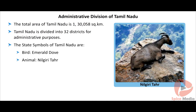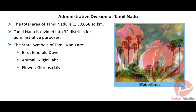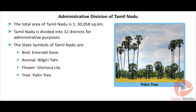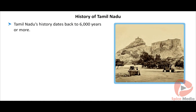The state symbols of Tamil Nadu are: Bird — Emerald Dove; Animal — Nilgiri Tahr; Flower — Gloriosa Lily; Tree — Palm Tree.